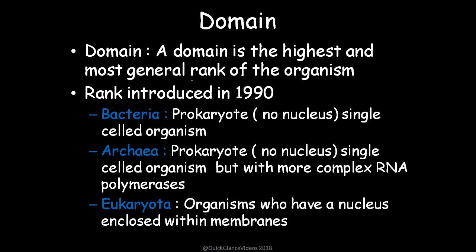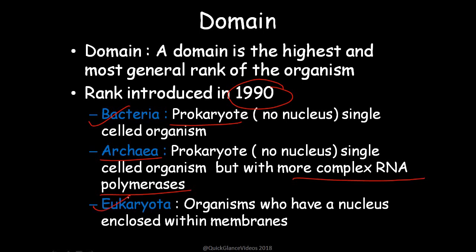The first rank is domain, the highest and most general rank of organisms. This rank was introduced in 1990 — earlier, kingdom was the base of categorization. Domain includes Bacteria, which is prokaryotic with no nucleus membrane and is a single-celled organism. Archaea is also prokaryotic but differs in having more complex RNA polymerase. Then there is Eukaryota — organisms with a nucleus enclosed within membranes. That's how these three domains are divided.